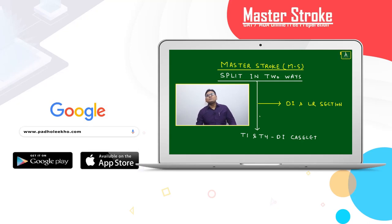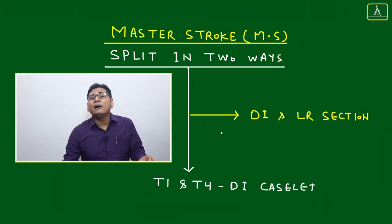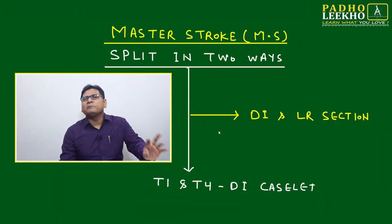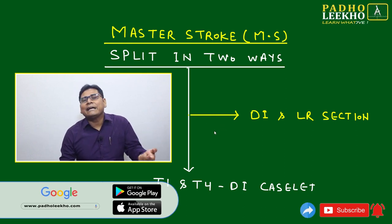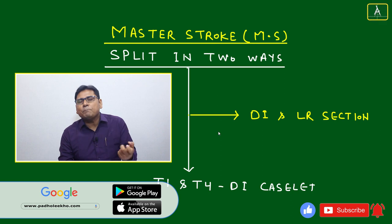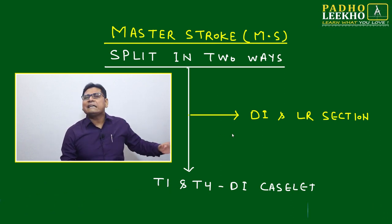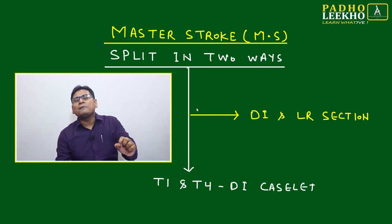Welcome to the master's talk. In this session, I am going to discuss how we can split any one number in two or more than two ways. This is one of the important ideas — how to make a DI case let. You may not believe it right now, but after five or ten minutes you will understand. Based on this very simple concept, so many DI case lets are framed and already asked in CAT.